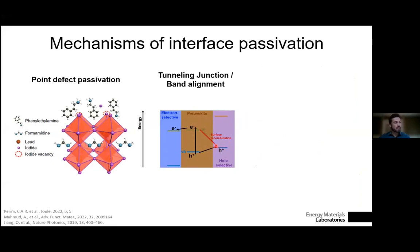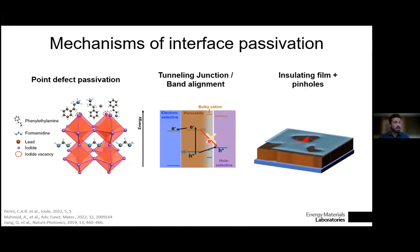If we have a non-ideal interface between perovskite and a charge transport layer — due to traps or bad energy alignment — the wrong type of carrier can recombine across the interface. The use of bulky cations with a larger band gap can create tunneling junctions if properly controlled in thickness, reducing this unwanted recombination pathway. Alternatively, a fairly thick but non-uniform insulating layer at the top surface, with some porosity or thinner areas, allows charges to be extracted via funneling while still providing passivation.